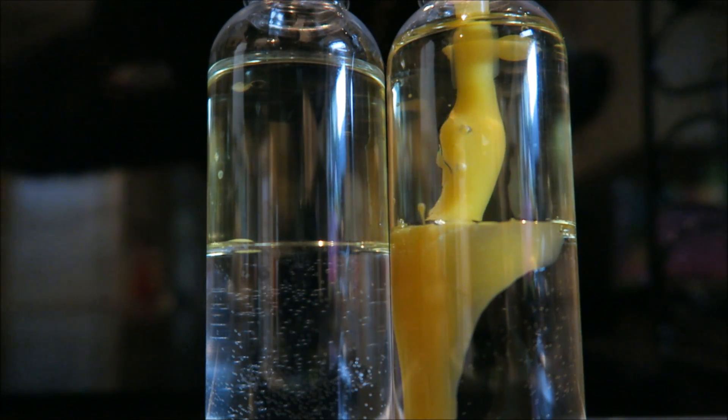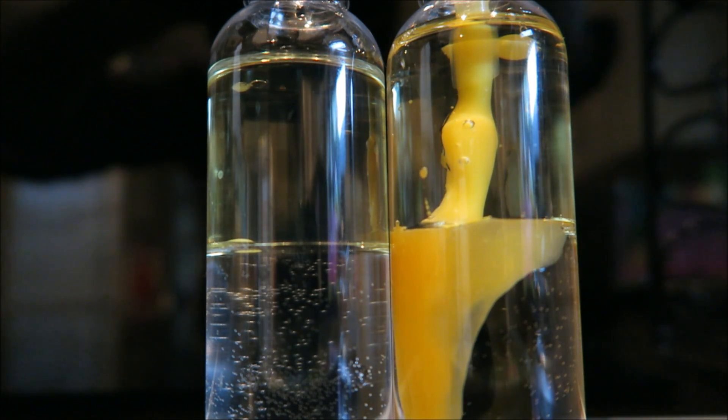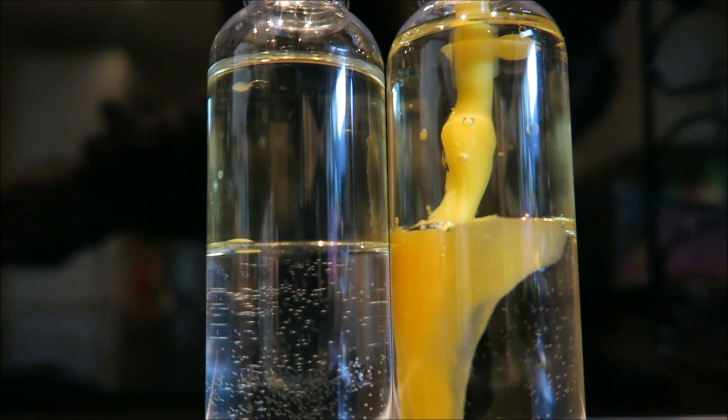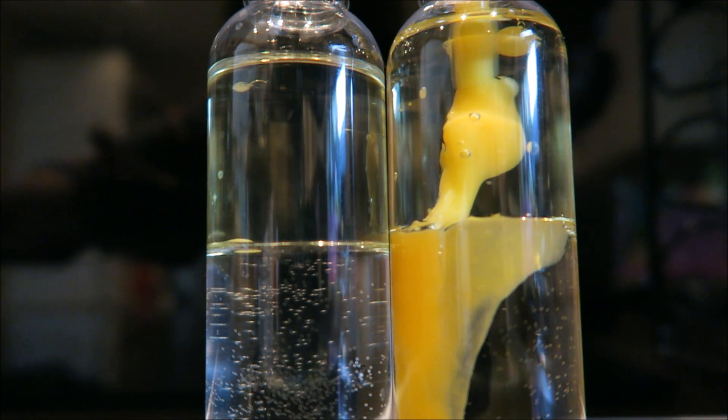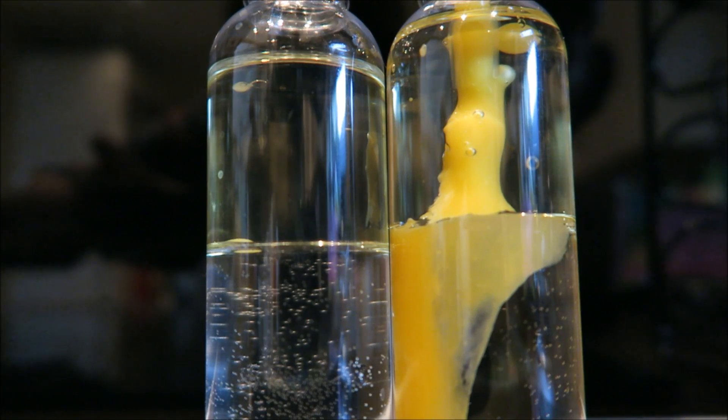So if you want to be fancy and make your own mayonnaise you probably don't want to do it like this. You probably want to do it in a food processor because it involves quite a lot of shaking. But this is how you do it.